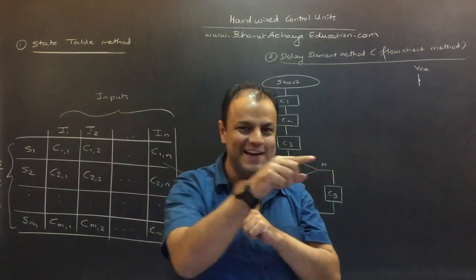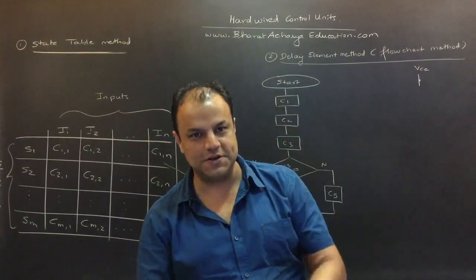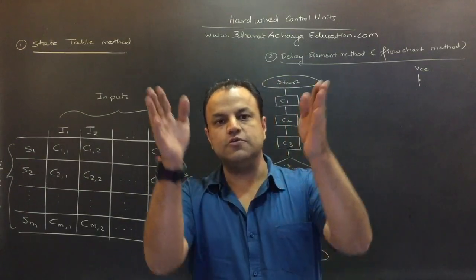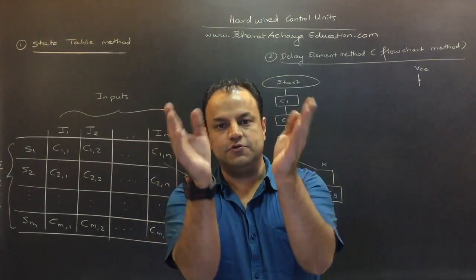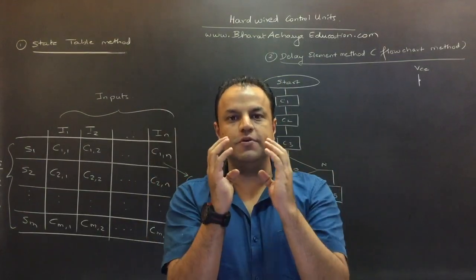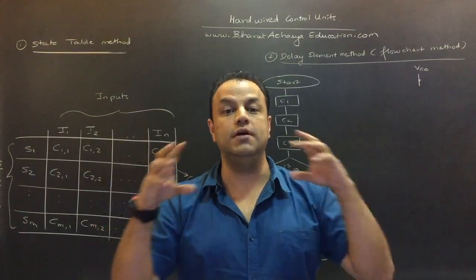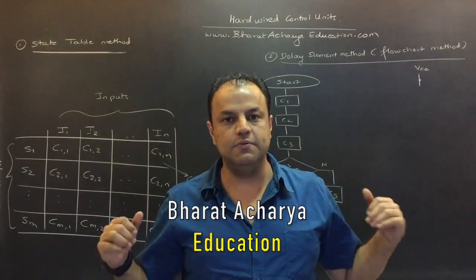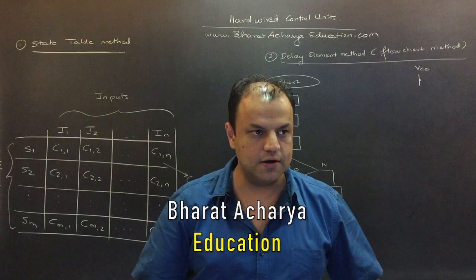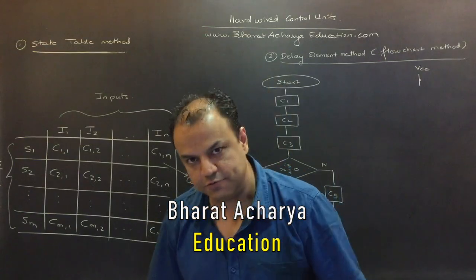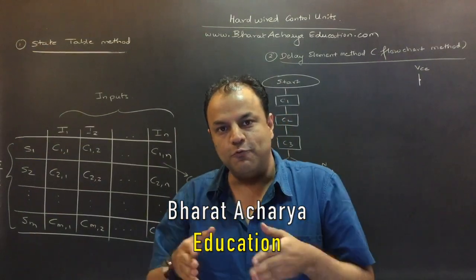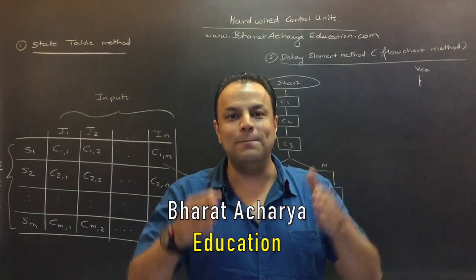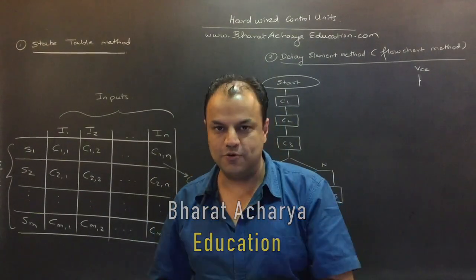Those activities are called micro-operations. Our previous video was on micro-operations, so if you've seen that you know what I'm talking about. Control signals cause micro-operations, and those control signals are produced by the control unit. That's what we are learning — how the control unit looks from inside. This is a video about hardwired control units. The next video I'll be making is about the software method of making control units, called micro-program control units.